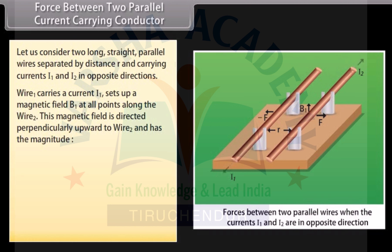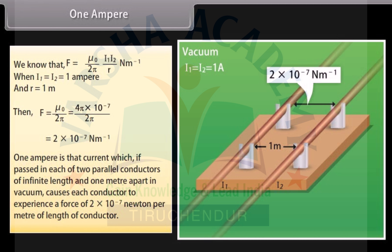We know that F = (mu₀ / 2π) × (I1 I2 / R). When I1 = I2 = 1 Ampere and R = 1 meter, the value of F = 2 × 10⁻⁷ Newton per meter. Therefore, one ampere is that current which, if passed in each of two parallel conductors of infinite length and 1 meter apart in vacuum, causes each conductor to experience a force of 2 × 10⁻⁷ Newton per meter of length of conductor.